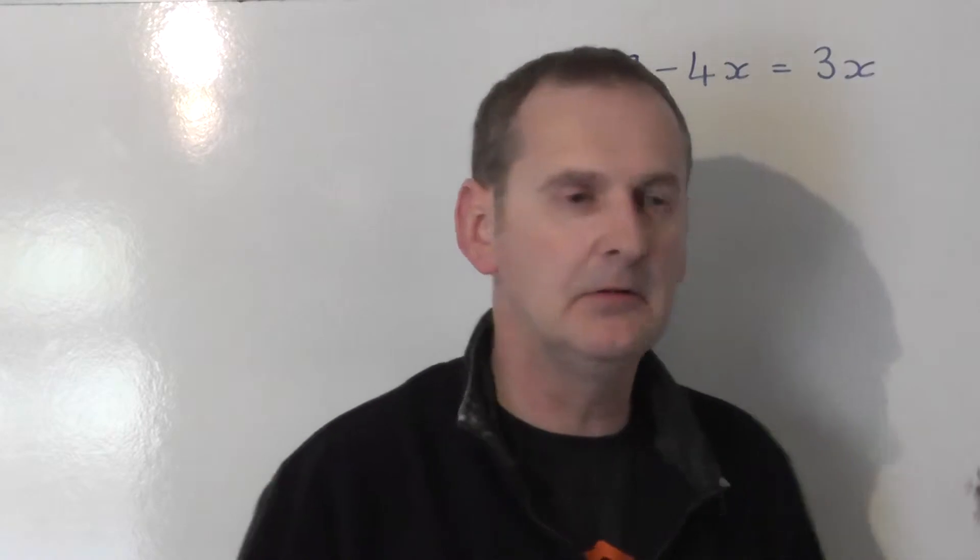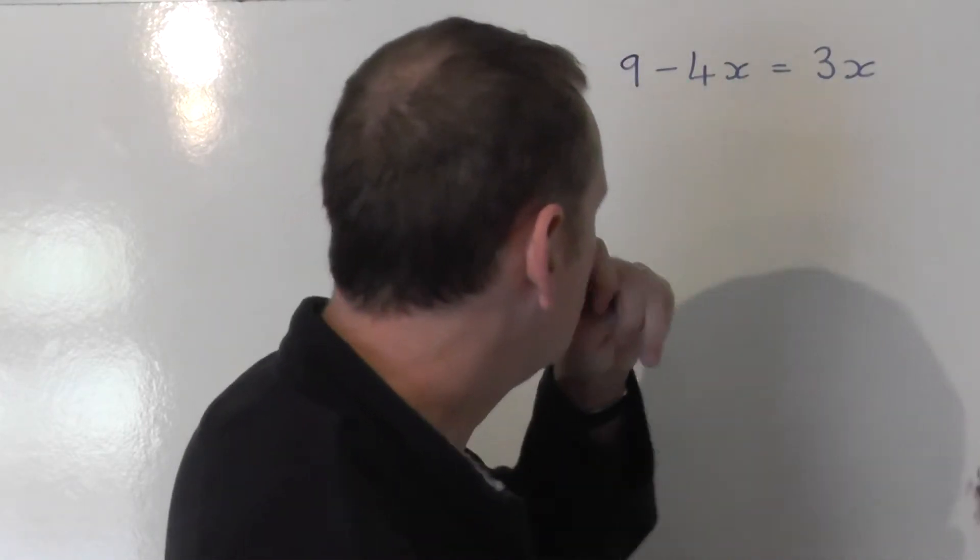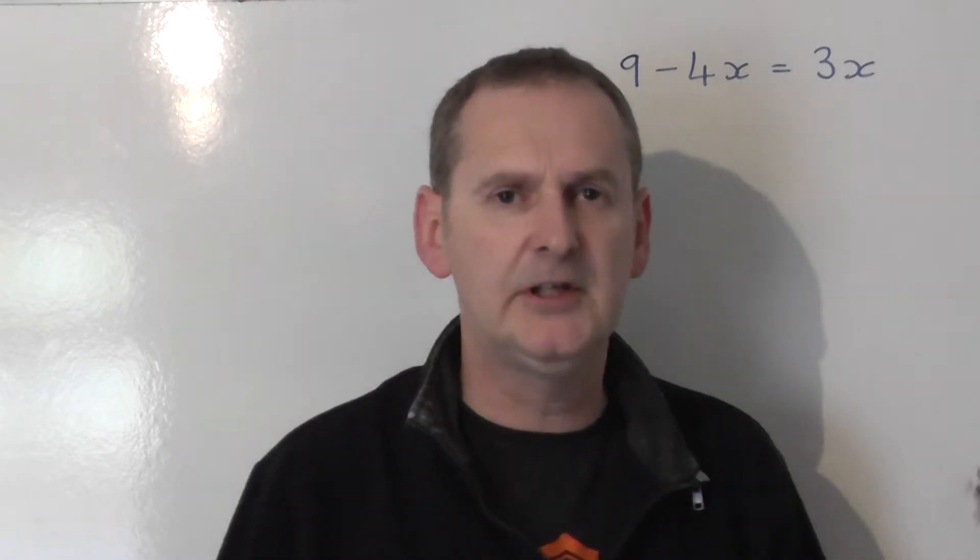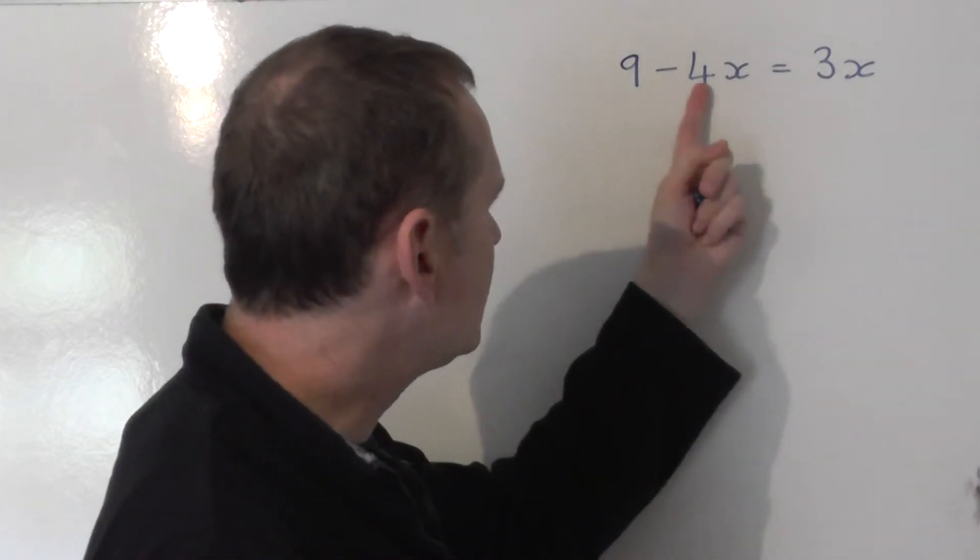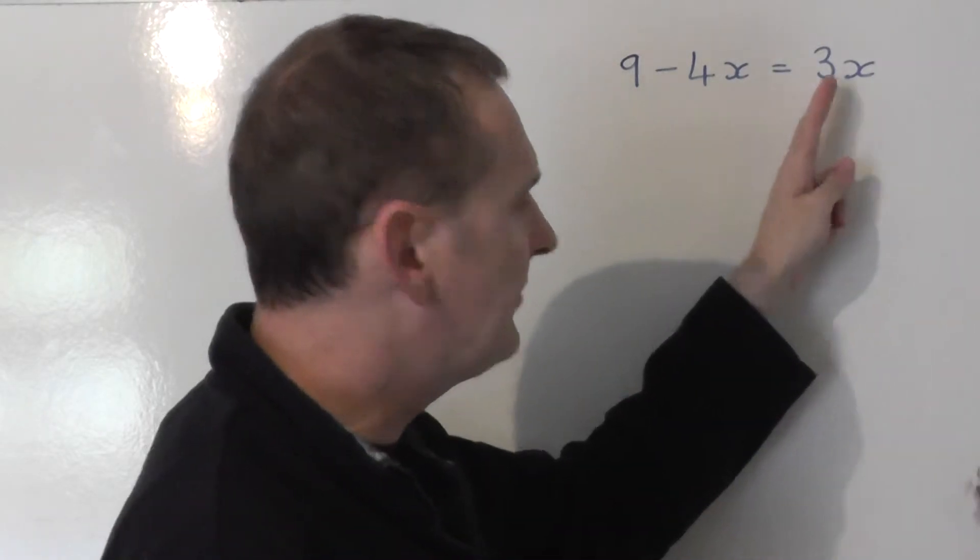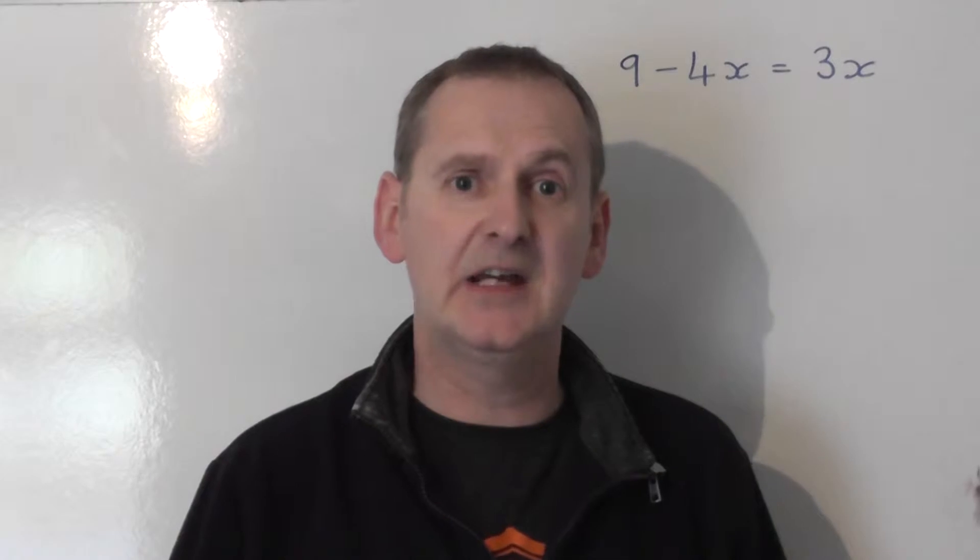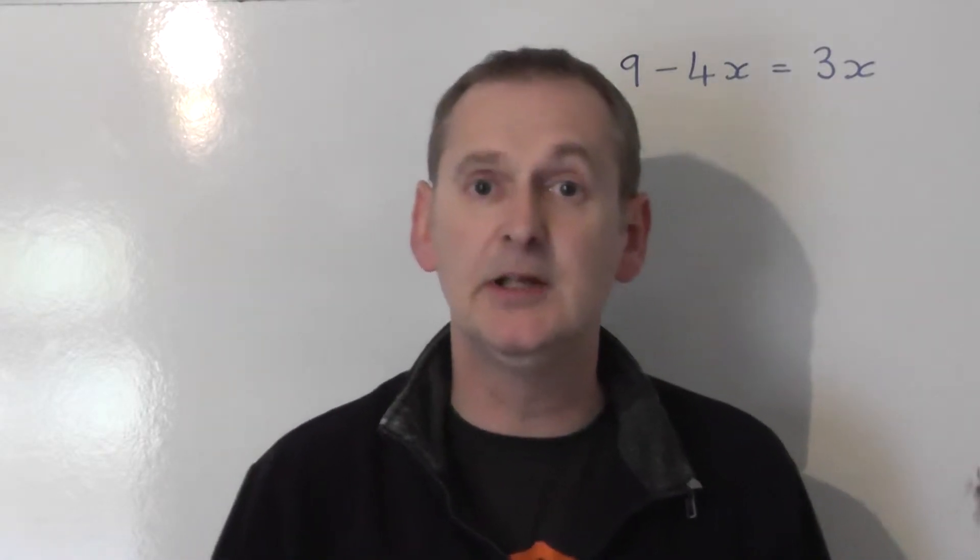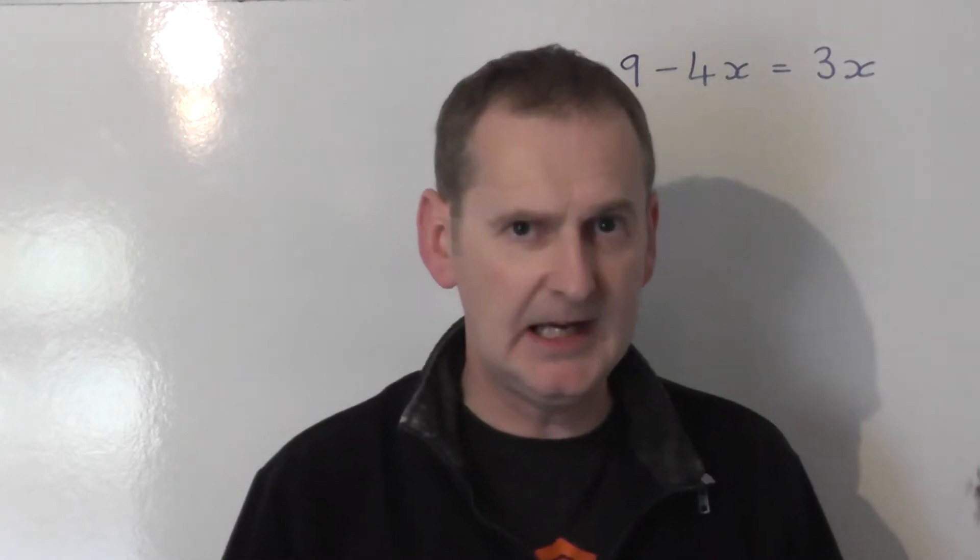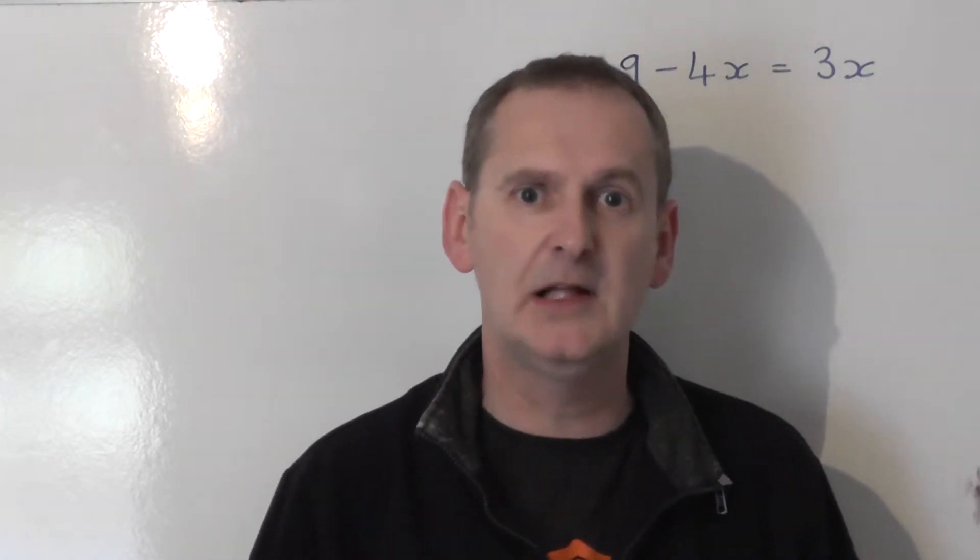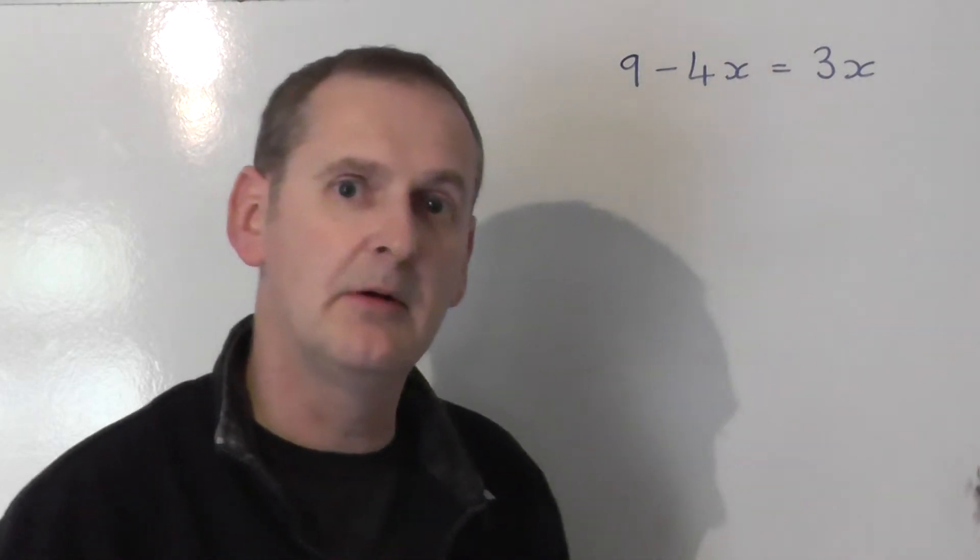Now your gut instinct might tell you there's more x's on the left-hand side because 4 is bigger than 3. But if you look carefully, you've got minus 4x on the left and positive 3x on the right. So in fact, there are more x's on the right-hand side, because positive 3 is bigger than minus 4. You have to take account of the signs when you decide which side has the most x's.